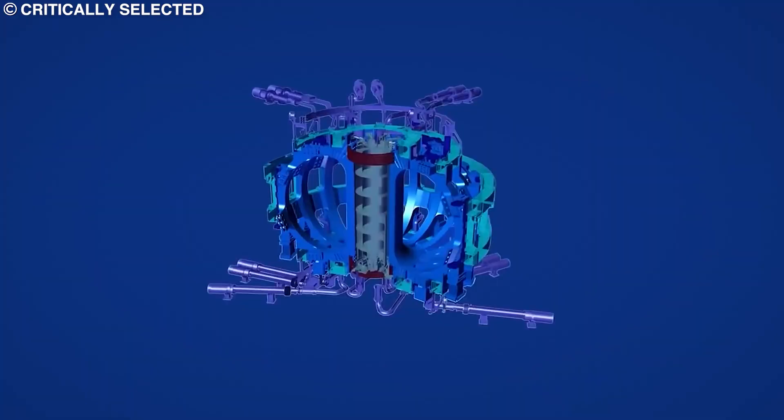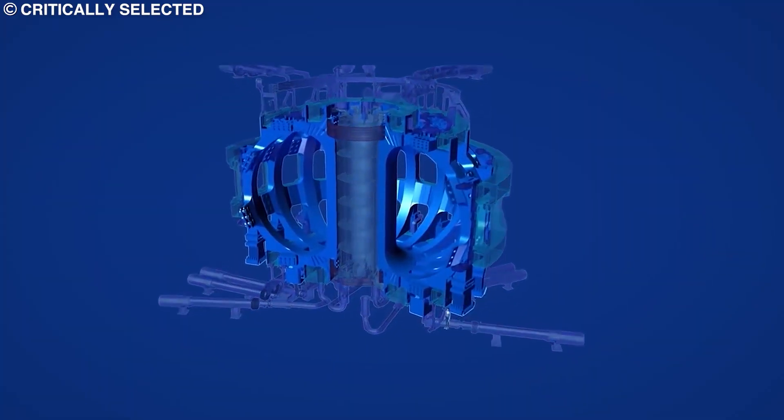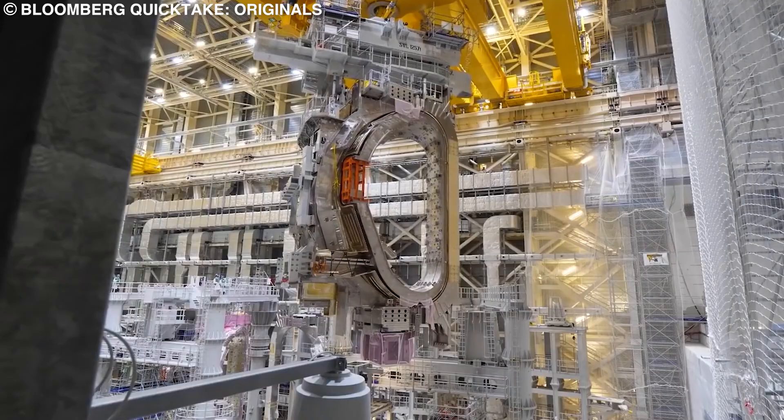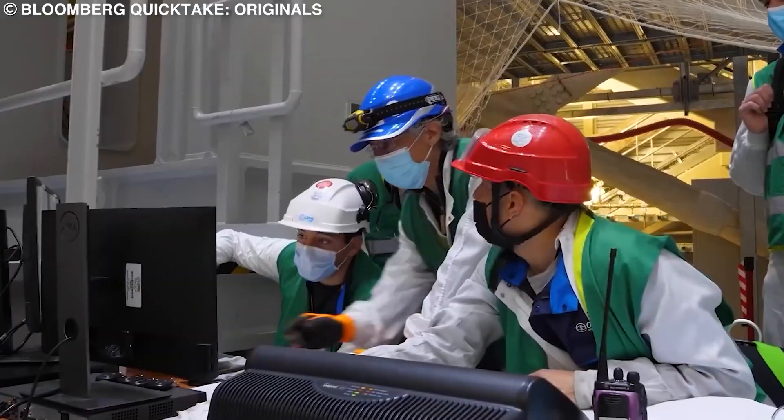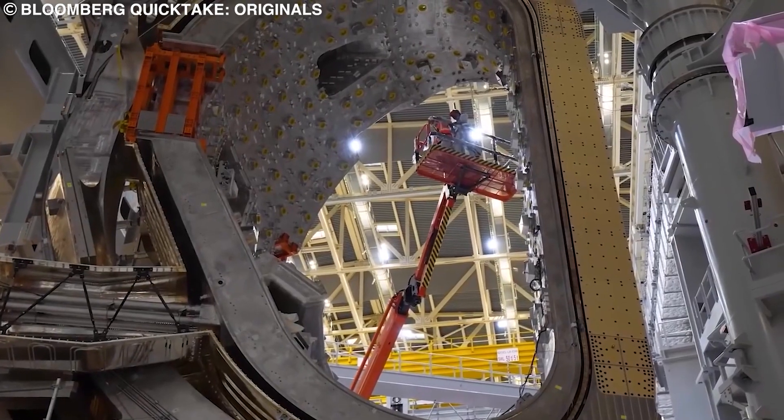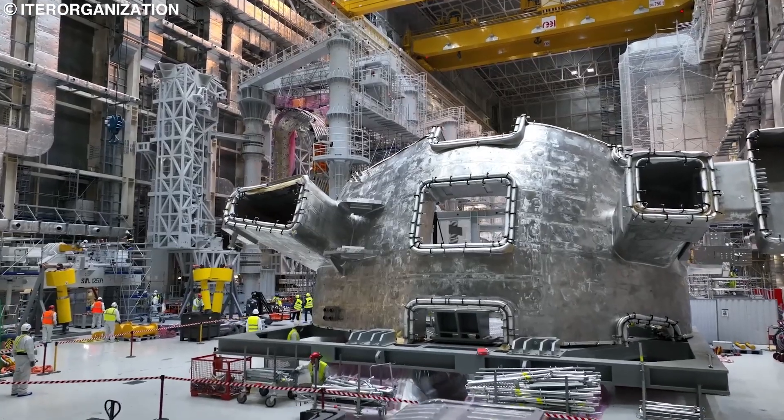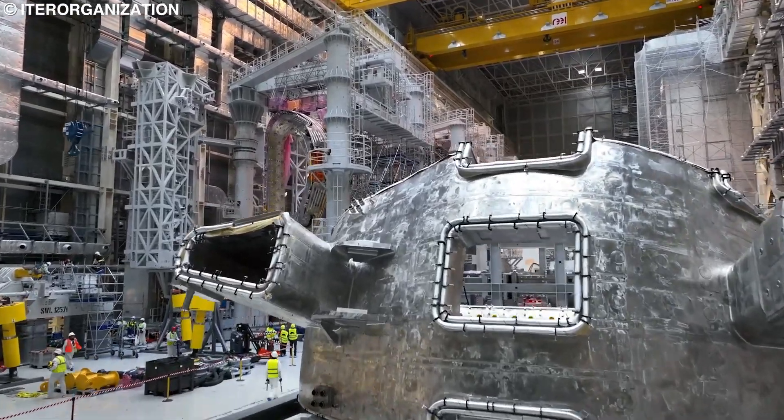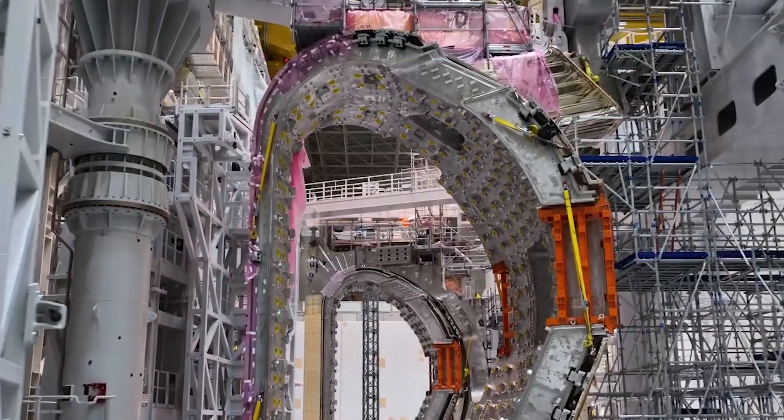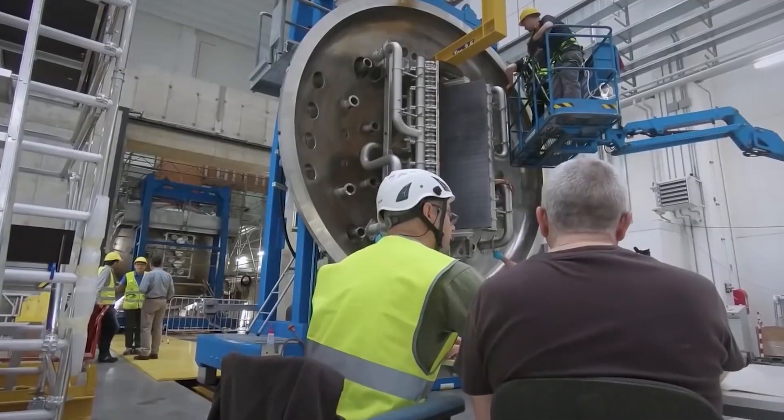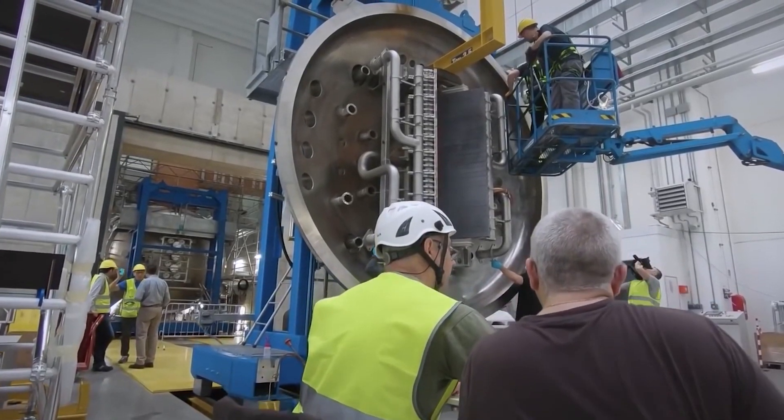Tokamaks have existed before, but ITER will be the world's largest tokamak, twice the size of the largest machine currently in operation. Scientists have been super ambitious with this, as they have increased the volume of the plasma chamber by a factor of 10 in comparison to the closest rival. This increased volume will allow the ITER tokamak to undertake constant, self-sustaining nuclear fusion, or at least that is the hope.